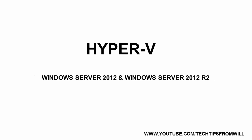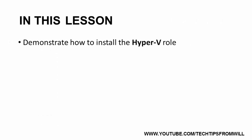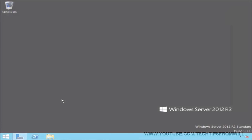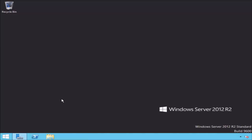Hi there and welcome to the next lesson in this free Hyper-V training course for Windows Server 2012 and Windows Server 2012 R2. In the last lesson I gave you an overview on what Hyper-V is and how it works. In this lesson I will start to create a Hyper-V infrastructure by demonstrating how to install the Hyper-V role. I will now change over to my Windows Server 2012 R2 server to demonstrate how to install the Hyper-V role.